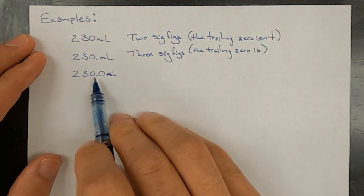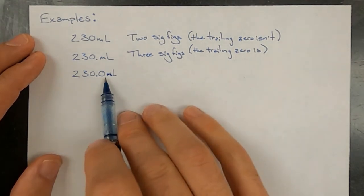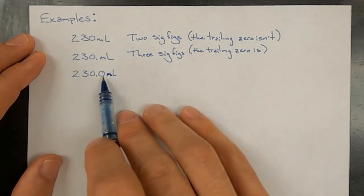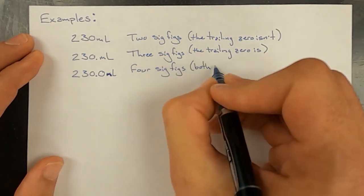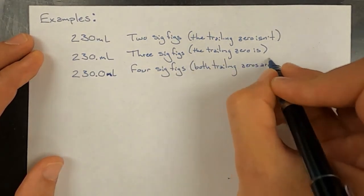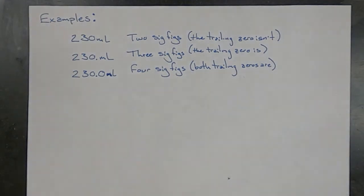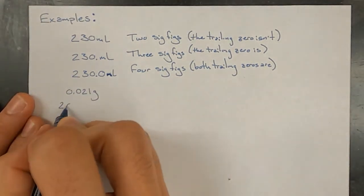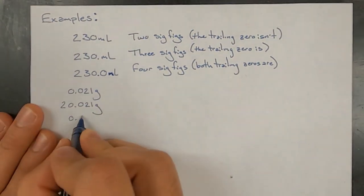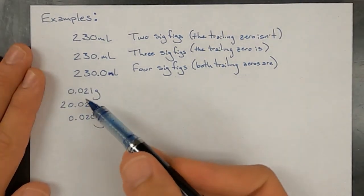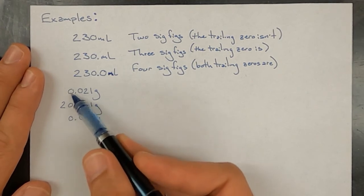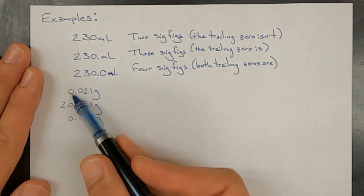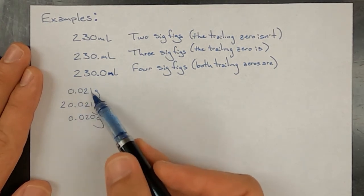In this last one of the first triplet, all digits are significant — both trailing zeros are significant because of the decimal point. Now in this next number, the leading zeros are placeholders and are not significant, so only the two and the one are significant.